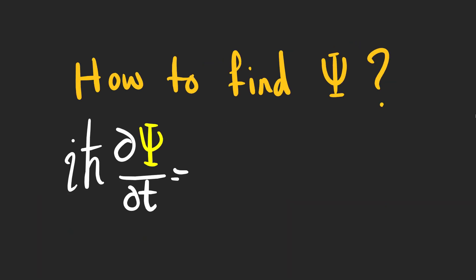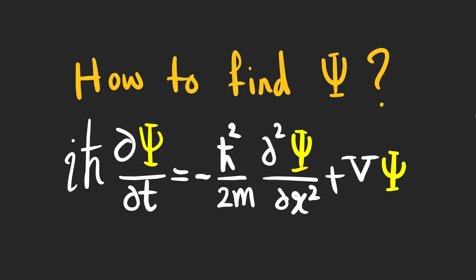Now the question is how to find psi using the Schrödinger equation. Before doing so let's talk about V, the potential energy influencing the particle. It can be a function of x and t but for now we suppose that it doesn't vary with time and it's just dependent on x. To solve the Schrödinger equation we use a method called separation of variables.